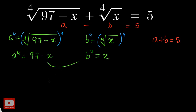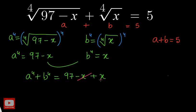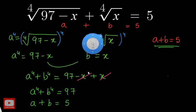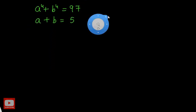Now I am going to add these two equations. The left-hand side will be a power of 4 plus b power of 4. On the right-hand side we have 97 minus x plus x — the x terms cancel each other, so we just have a power of 4 plus b power of 4 equal to 97. We now have a system of two equations: a⁴ + b⁴ = 97 and a + b = 5. If we solve them we get the value of a and b, and from there we can get x as well.